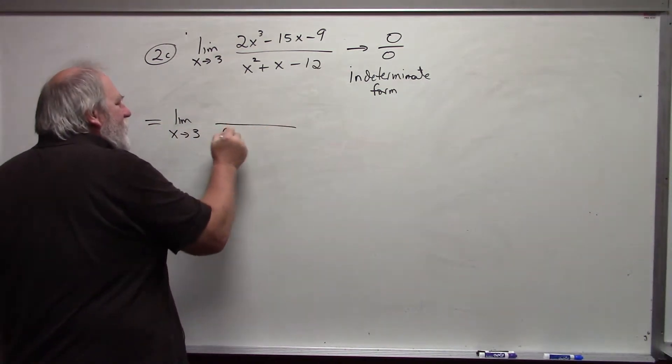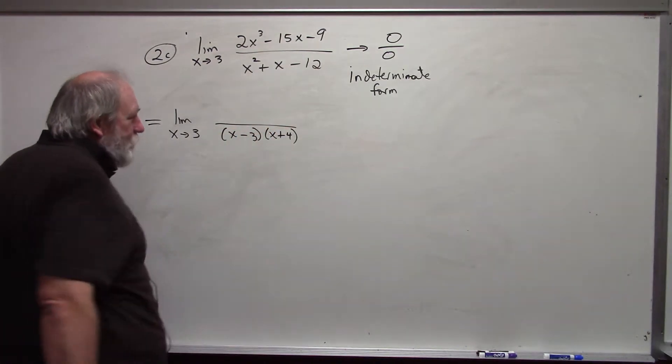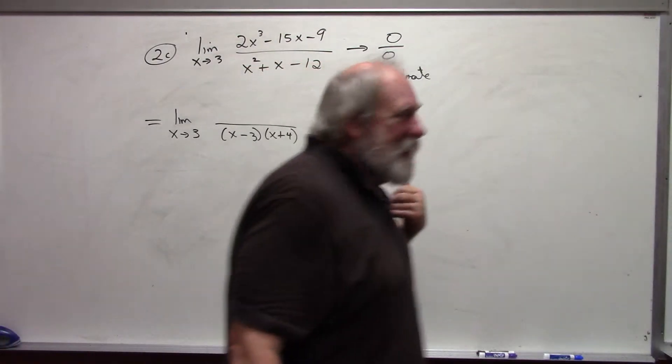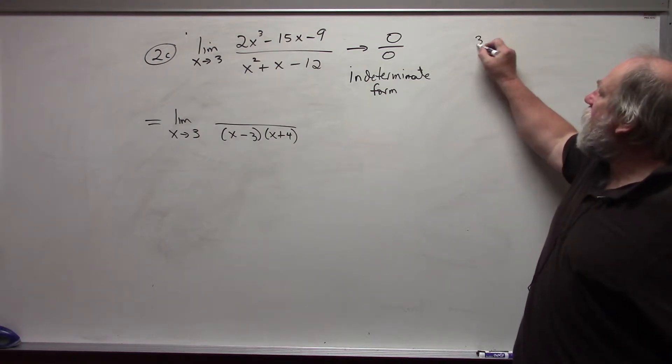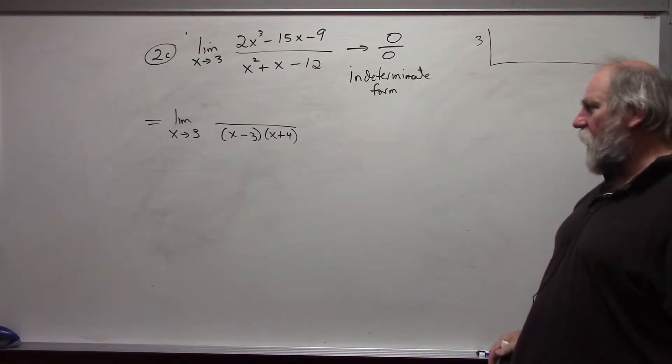My denominator factors as x minus 3 times x plus 4. It's simple to factor. My numerator is a little bit more complicated because of the cubic. But since I know that x minus 3 is a factor, 3 is a zero, I can use synthetic division. I will remind you of how to do that.